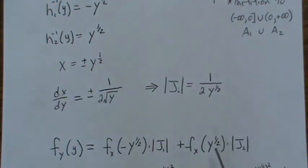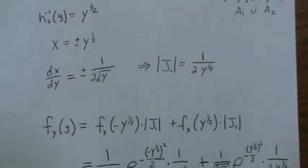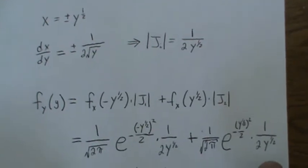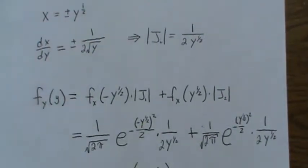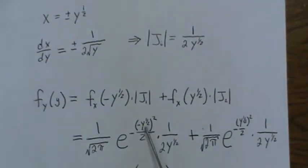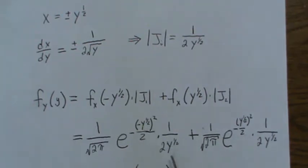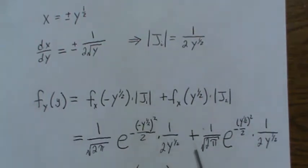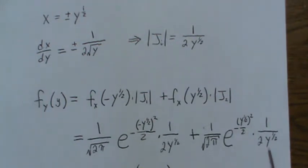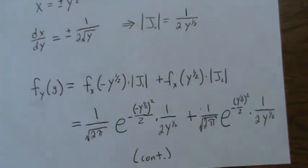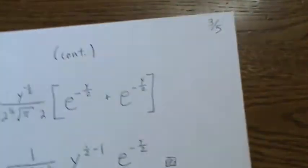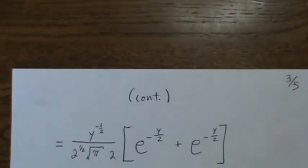But here we're taking, in region 1, it's minus Y to the one-half, and in region 2, it's Y to the one-half. So we plug those values in to our normal distribution. So here, Y to the minus one-half, and then here's the Jacobian of that transformation. Plus, plug in positive one-half Jacobian.